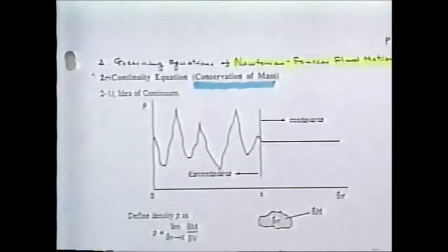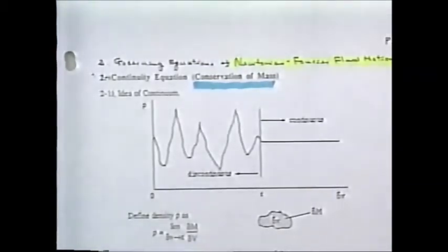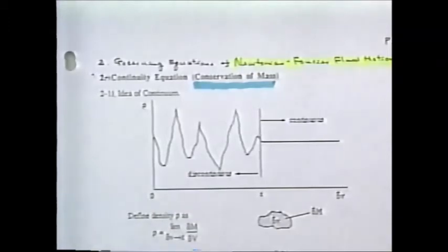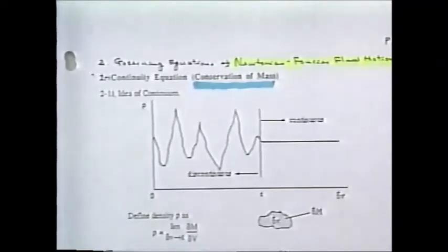The first derivation is the conservation of mass, popularly named the continuity equation — because, as was said, how much fluid comes into a channel, how much must go out. You can see the continuity in that sense. The better term is actually the equation for conservation of mass.